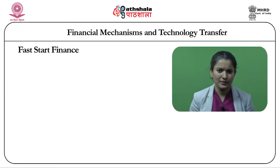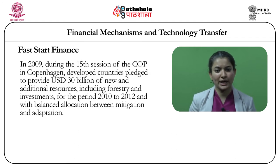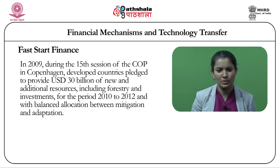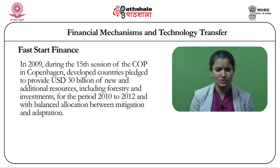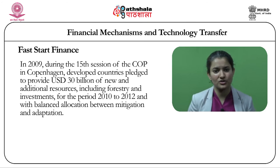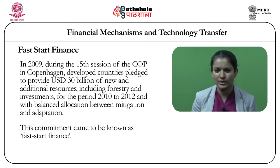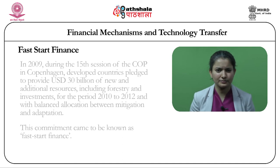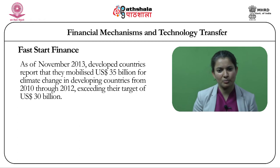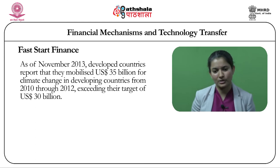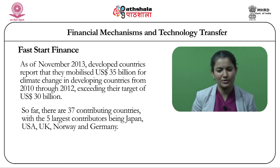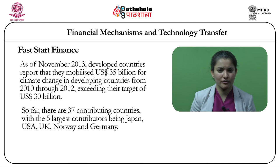The third major channel for finance under the UNFCCC has been the Fast Start Finance period. In 2009, during the 15th session of the COP in Copenhagen, developed countries pledged to provide US$30 billion in new and additional resources, including forestry and investments, for the period 2010–2012, with balanced allocation between mitigation and adaptation. As of November 2013, developed countries reported they mobilized US$35 billion for climate change in developing countries from 2010 to 2012, exceeding their target. There were 37 contributing countries, with the five largest contributions coming from Japan, the United States, the United Kingdom, Norway and Germany.